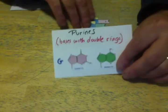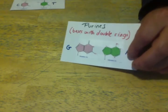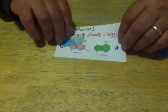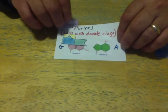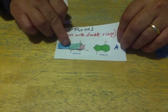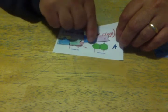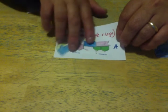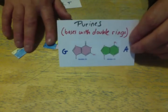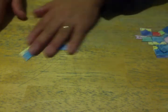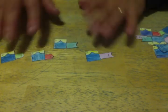G and A are double — G has two rings and A has two rings. These are called purines: two-ring bases. So there are only four different kinds: A, T, G, and C.